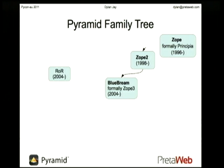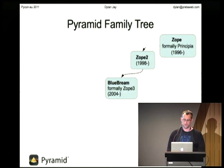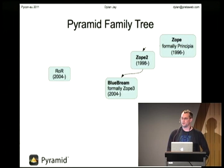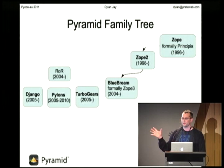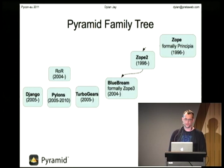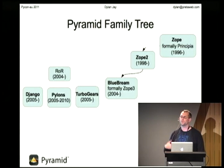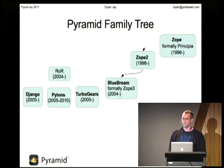BlueBream is still not used a lot, but what they did do is invent a thing called the Zope Toolkit, which takes some of the very base concepts of the component architecture, and a lot of other frameworks are using that, like Grok and Pyramid. Then we had Ruby on Rails coming out around 2004, and we had a Cambrian explosion where we got all these different Python frameworks, like Django, Pylons, and Turbogears, which were influenced by Ruby on Rails. So we had a lot of MVC, lightweight frameworks coming out at the time.